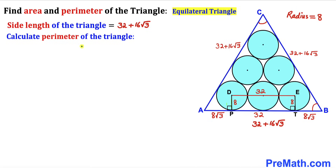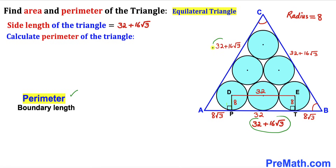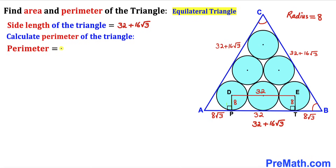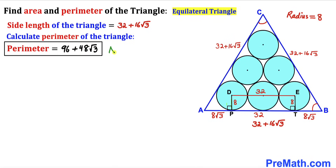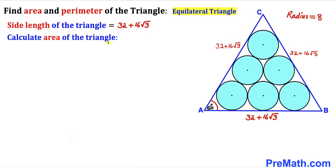Now let's calculate the perimeter of triangle ABC. The perimeter is the sum of all side lengths, so it equals 3 times the side length: 3 × (32 + 16√3). Distributing gives us a perimeter of 96 + 48√3. We have now determined the perimeter of this triangle.